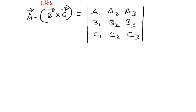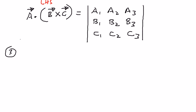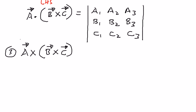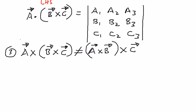The third property is: if we take vector A and cross it with the product of vectors B cross vector C, that is not the same as saying vector A cross vector B, and then crossing that result with vector C. So A cross (B cross C) is not equal to (A cross B) cross C.